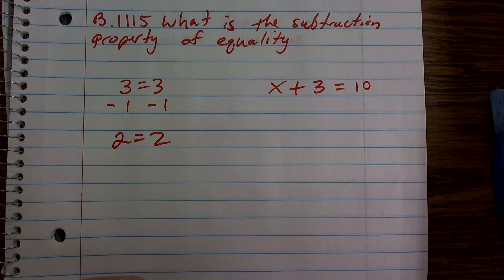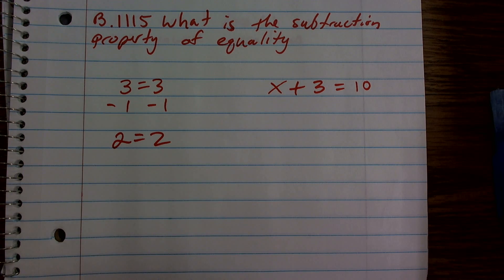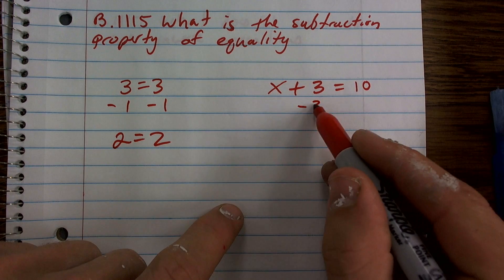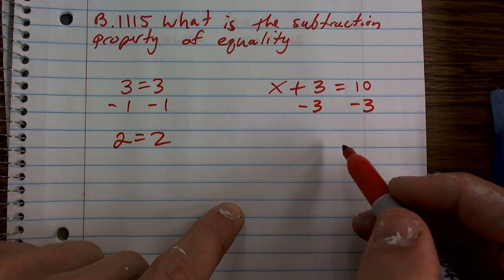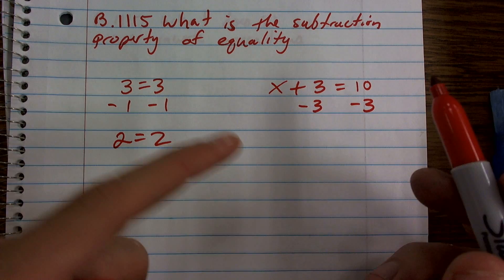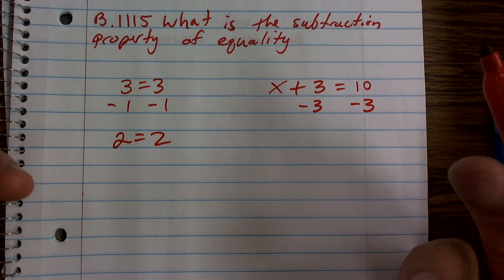However, by using the subtraction property of equality, if I subtract 3 on the left and the right side of my equal sign, I'll produce an equivalent equation, meaning it's going to have the same solution.